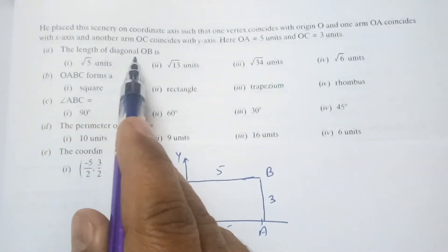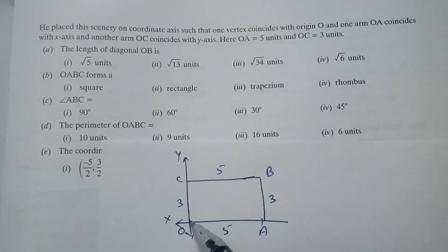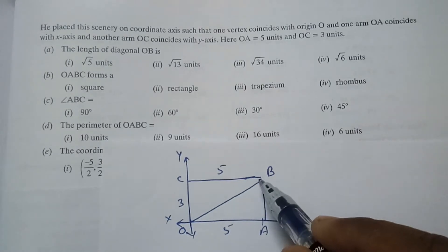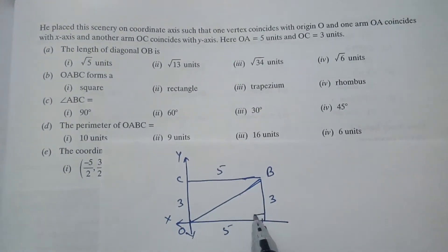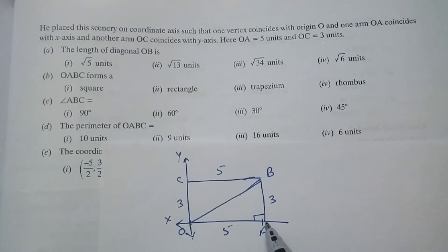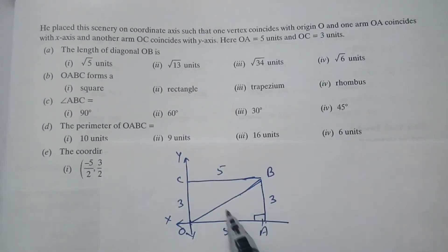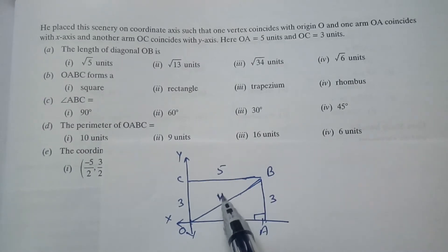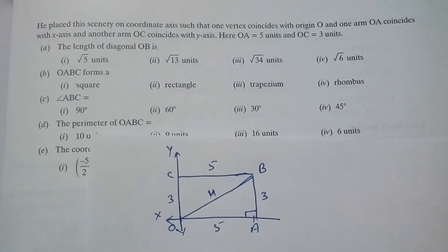Now, here it is given the length of the diagonal OB. OB is the diagonal. So because this angle is right angle, this OAB will be a right angle triangle. So according to this we will find this because this becomes hypotenuse. So by Pythagoras theorem we can find it.